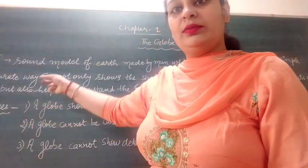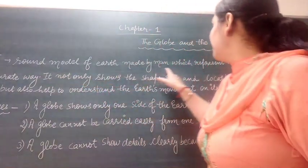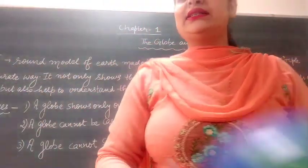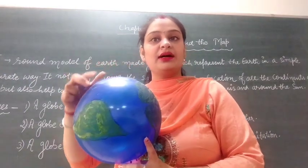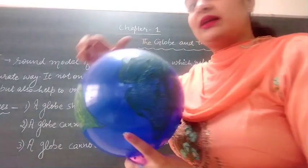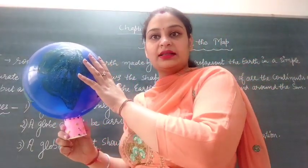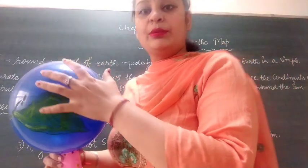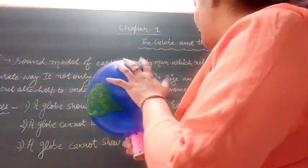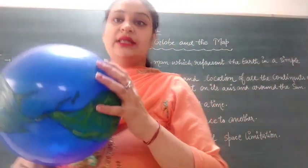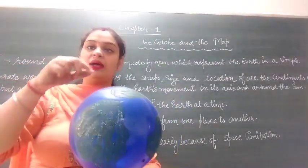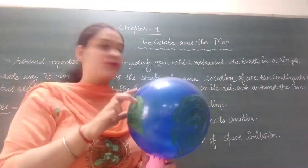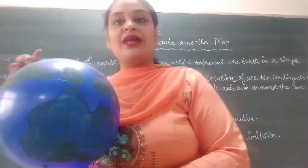So now, the globe is a round model of Earth made by man, which represents the Earth in a simple and accurate way. With the help of a globe we can easily understand the concept of the Earth — like that it is round in shape. It not only shows the shape, size, and location of all the continents and oceans, but also helps us understand the movement of Earth on its axis around the sun. These are some of the advantages of the globe.